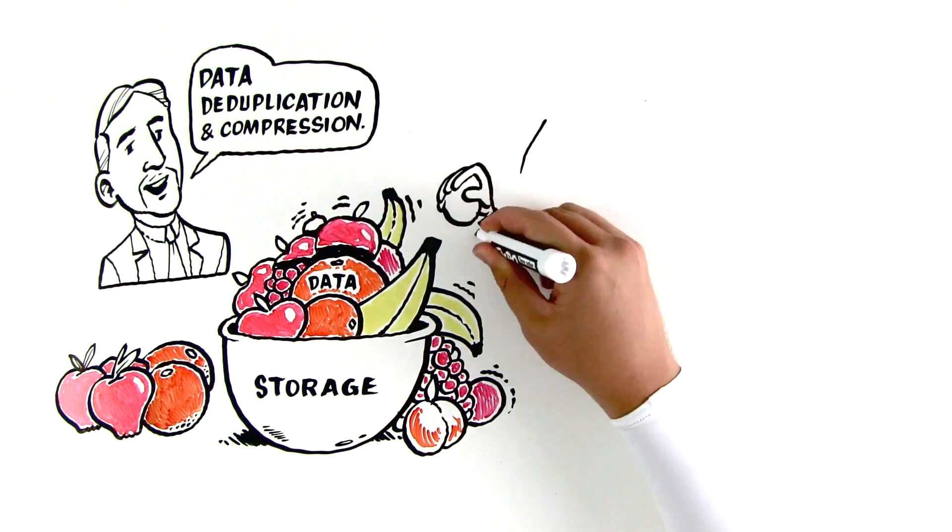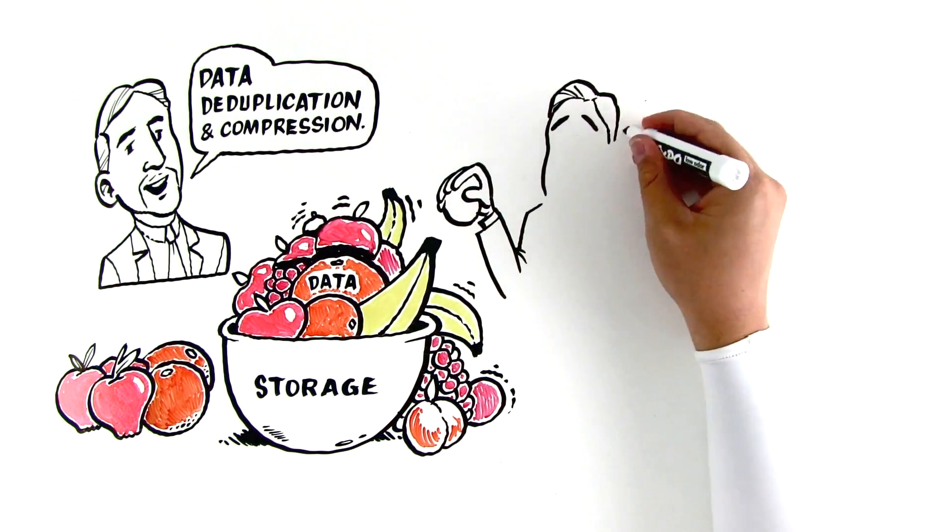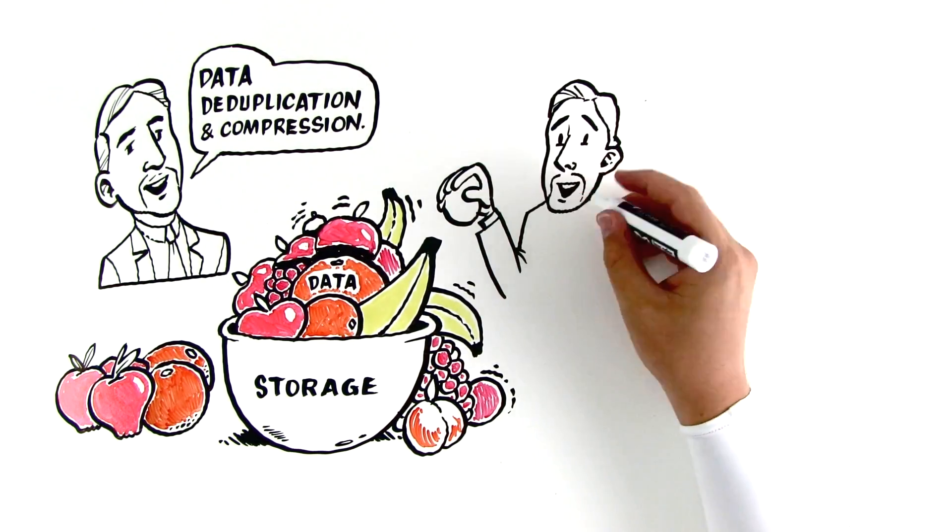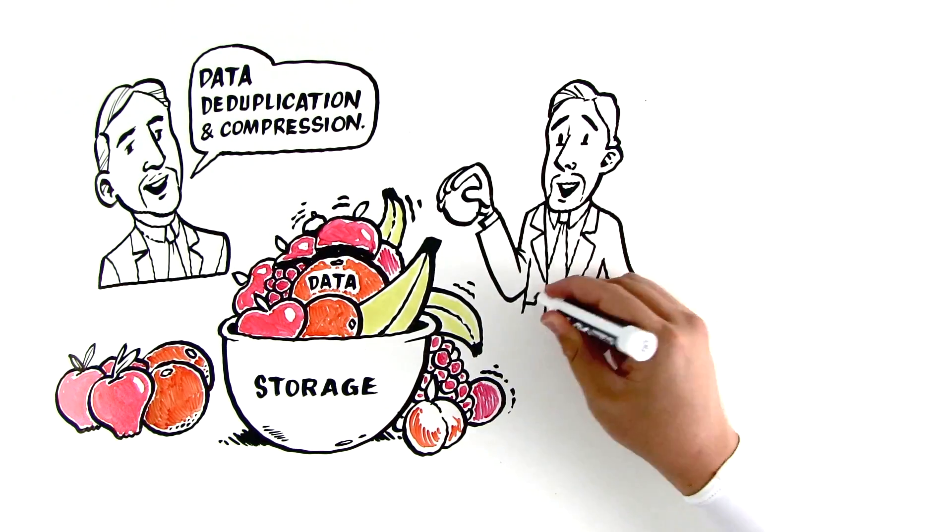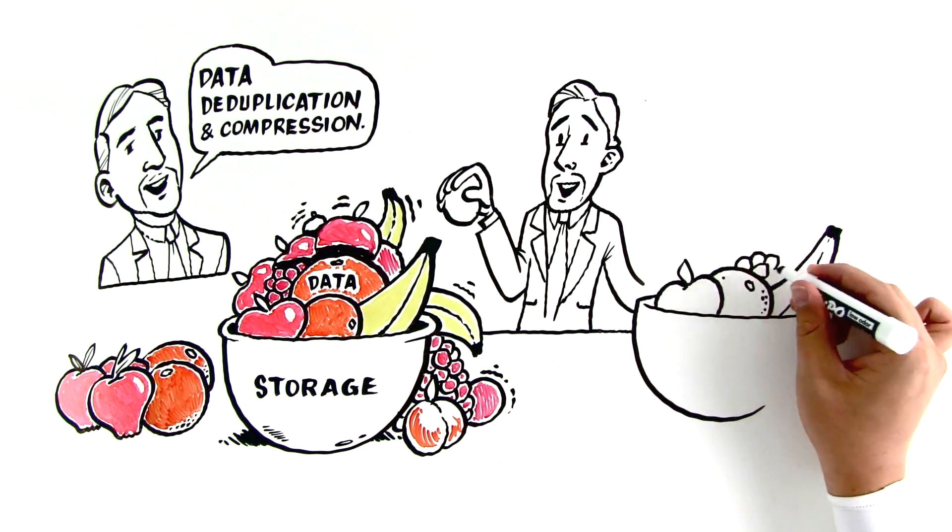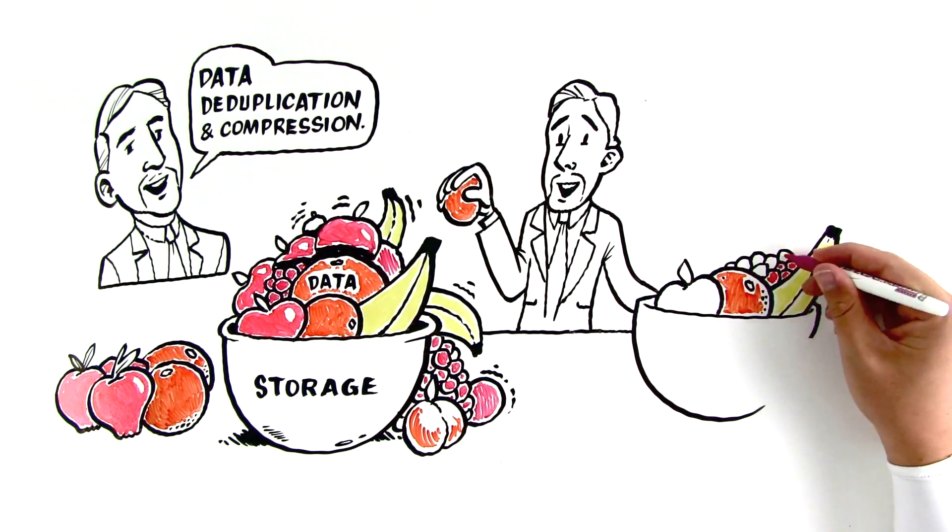That's where deduplication and compression come in. Deduplication removes similar pieces of fruit, leaving just one for reference. Compression leaves it all in place, but pushes it closer together, saving space.